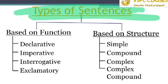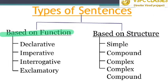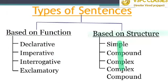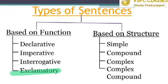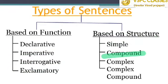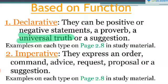Types of sentences: based on function, we have four types — declarative, imperative, interrogative, and exclamatory. Based on structure, we also have four types — simple, compound, complex, and complex compound.